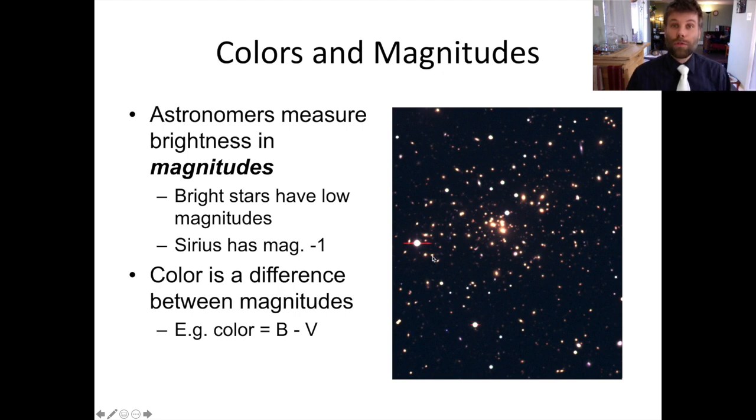And then the faintest objects ever recorded, which have been measured by the Hubble Space Telescope, have a magnitude of approximately 30. Astronomers take these magnitudes and combine them to then calculate colors or color indices to give them their more proper name. A color index is how astronomers decide whether a star is blue or red or in between, and we do that by comparing the brightness of stars in two distinct filters.